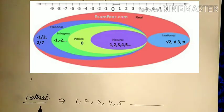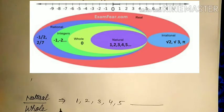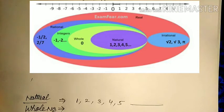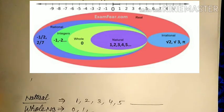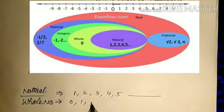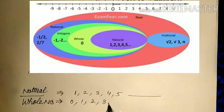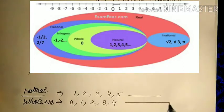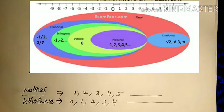Now we can talk about whole numbers. What is a whole number? If we take zero and include it with natural numbers, what we get is called the whole number set.